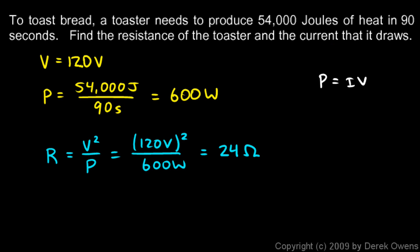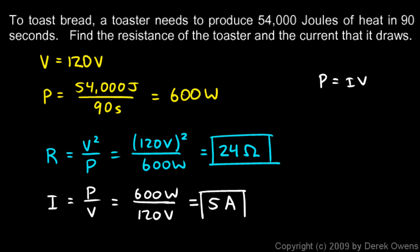And we're also told to find the current that it draws. Well, again, my equations for power - one of those was P equals IV. So I can just solve this for I. The current I is going to be P over V, and I know that 600 watts was my power and I'm assuming 120 volts here. So I just divide 600 divided by 120, comes out to 5, and that would be 5 amps. So those are my answers: 24 ohms for the resistance and 5 amps for the current.